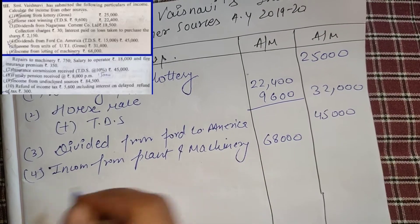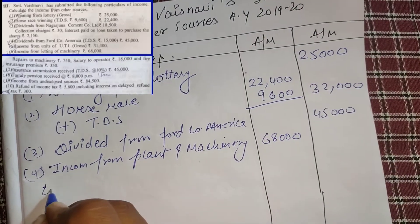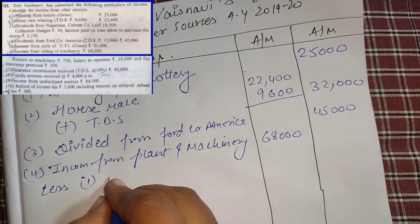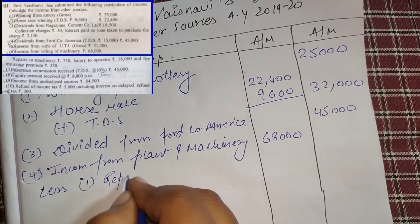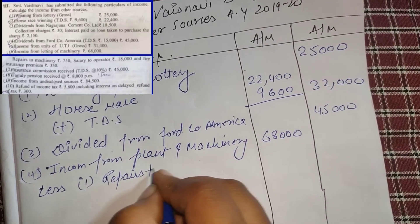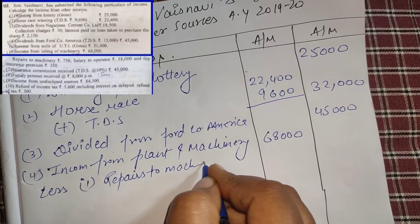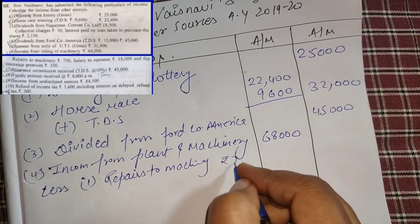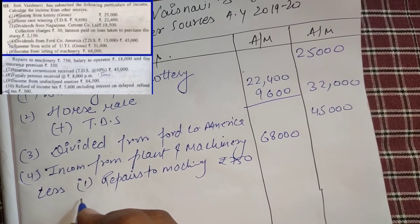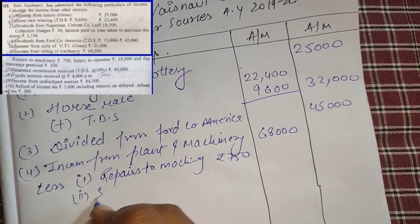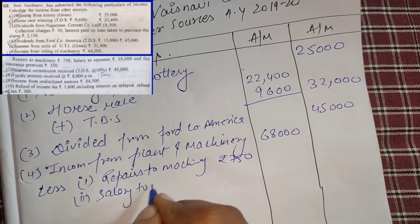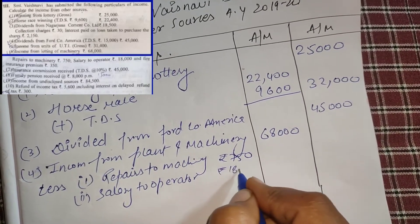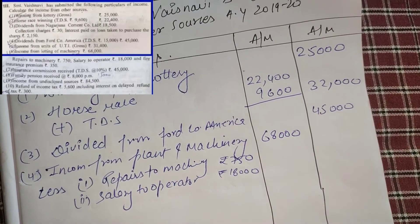Letting off machinery is 80,000. Allowable expenses — 68,000. Repairs to machinery: 7,500. Salary to operator: 18,000. We will write 18,000.